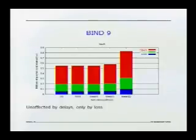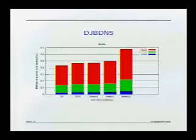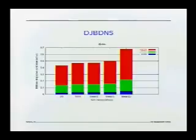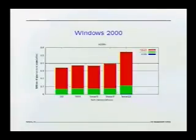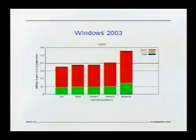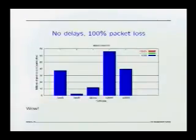The results for djbDNS — nothing really obvious to comment on there. Here's Windows 2000 and Windows 2003.